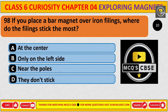If we place a bar magnet over iron filings, where do the filings stick the most? The correct answer is C. Near the poles.